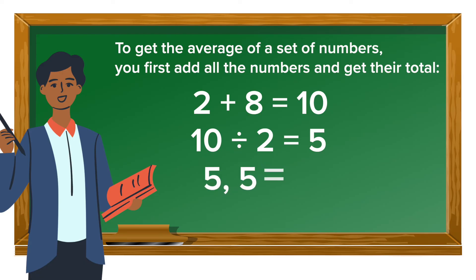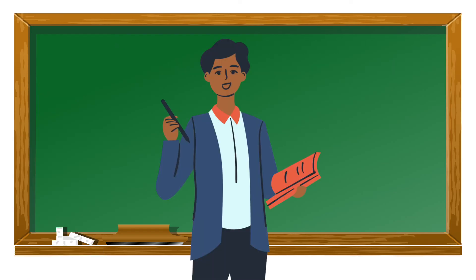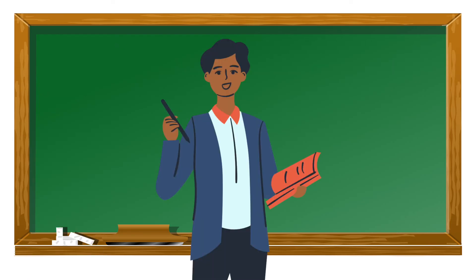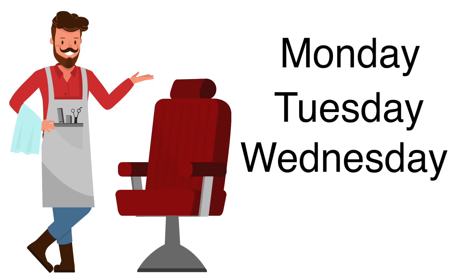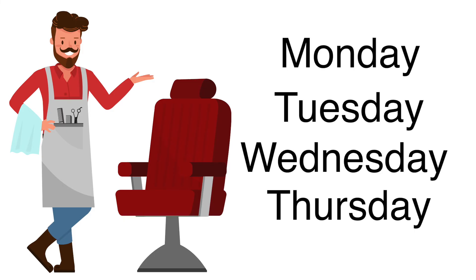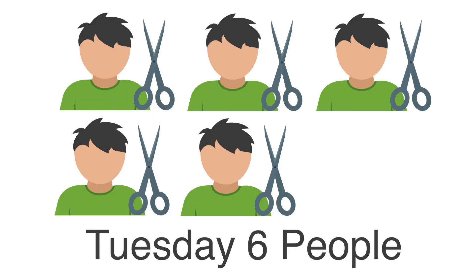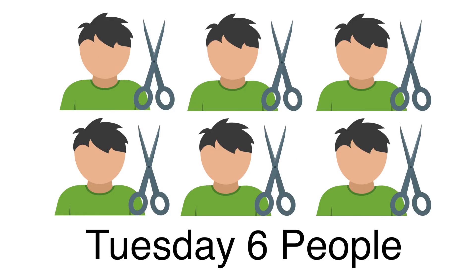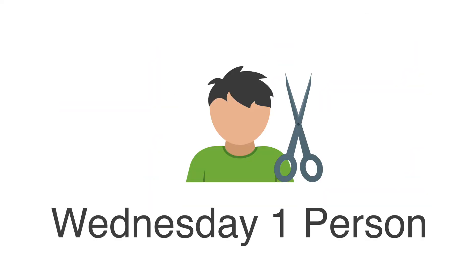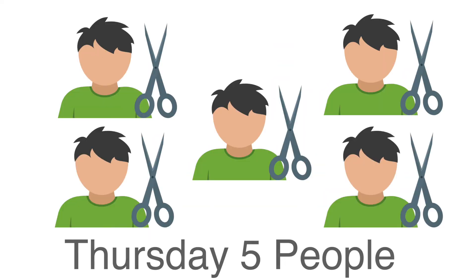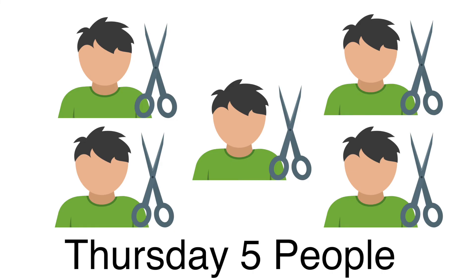Getting the average lets us think about what it would be like if all the numbers were the same. Let's look at one last example. Let's suppose a hairdresser is open on four days: Monday, Tuesday, Wednesday, and Thursday. On Monday, two people go to the hairdresser. On Tuesday, six people go. On Wednesday, one person goes, and on Thursday, five people go.